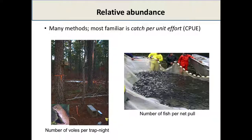Relative abundance is in some ways simpler and is certainly far more common. The most common approach is catch per unit effort — I go to a site, use a standardized methodology, and record how many samples I get. I go to another site, do the same standardized methodology, and record the count. For example, I take a gill arch from a stickleback, count the number of gill rakers using standard methodology, and do the same on a stickleback from another lake. This way I can build up an estimate of relative abundance.